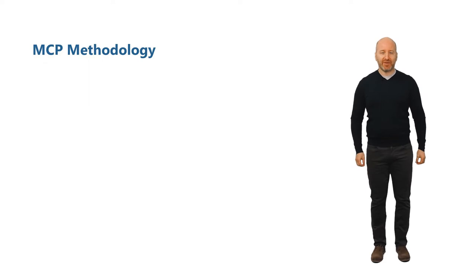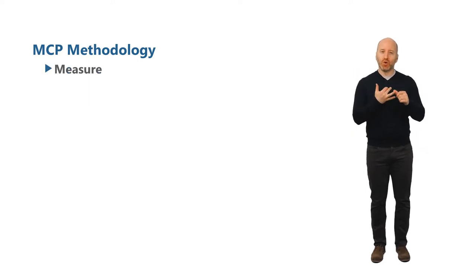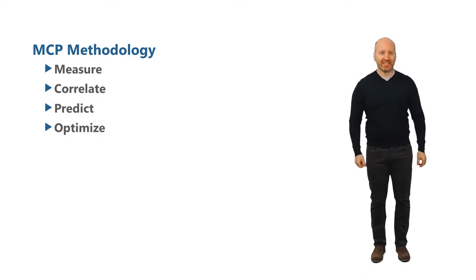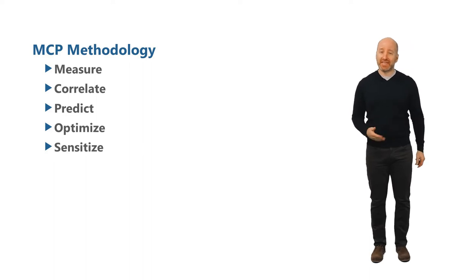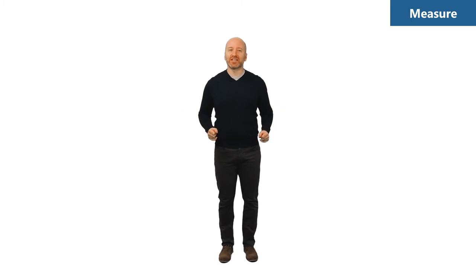The standard forecasting methodology involves five steps: measure, correlate, predict, optimize, and sensitize. But more simply, the methodology is generally known as MCP — measure, correlate, predict. As we walk through this MCP process, we'll keep you oriented by using call-outs to indicate which step we're on. Let's get started with the first step: measurement.